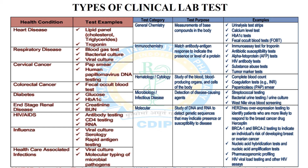The next category is immunochemistry. Its purpose is to match antibody-antigen responses to indicate the presence or level of a protein. Examples include immunoassay test for troponin, antibiotic susceptibility test, alpha-fetoprotein test, and HIV antibodies test.